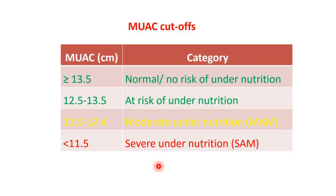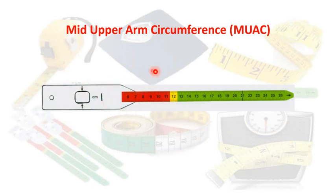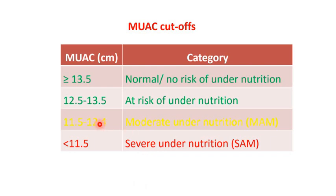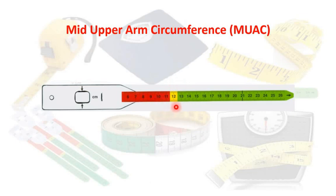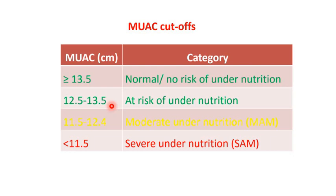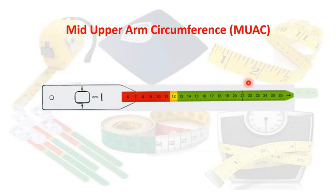On the measuring tape, less than 11.5 cm in red indicates severe under-nutrition; 11.5 to 12.5 in yellow indicates moderate under-nutrition; 11.5 to 13.5 is at risk of under-nutrition; and equal to or more than 13.5 in green is normal with no risk. Above 21 cm, black lines indicate over-nutrition. The tape's color-coded cut-off points indicate the level of malnutrition in children.